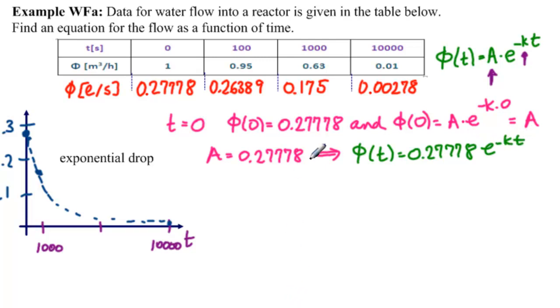So our function is now fee of t equals 0.27778 e to the minus k t. Now I have to tell you that I don't usually like to use the first and the last data. This first piece is awfully close to here, so it's probably not accurate to two places. And this one is awfully close to zero.